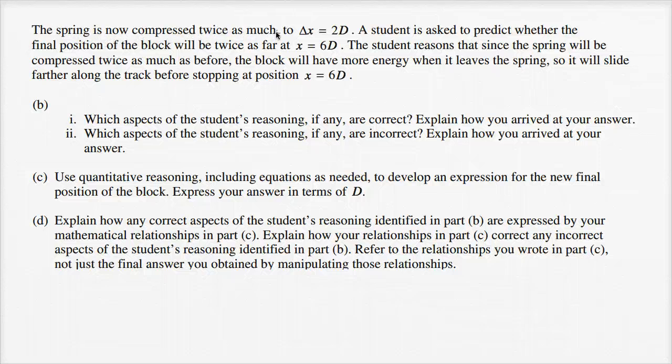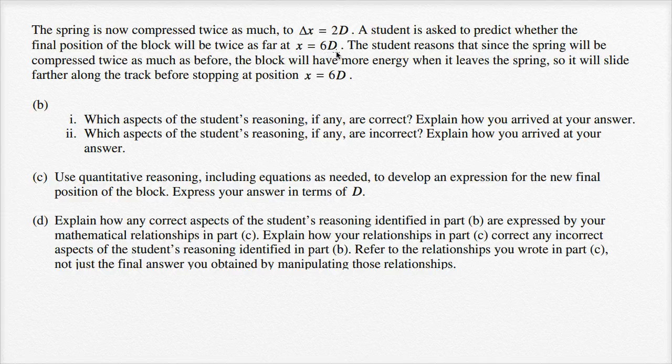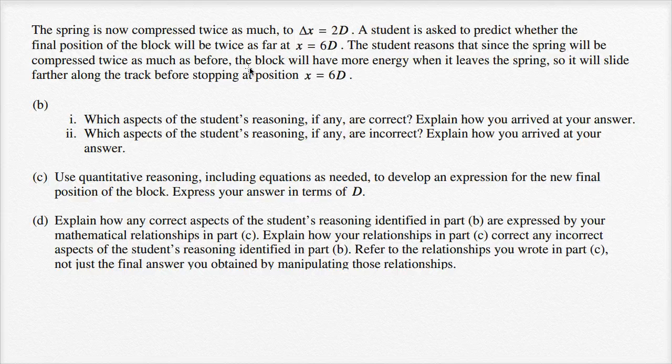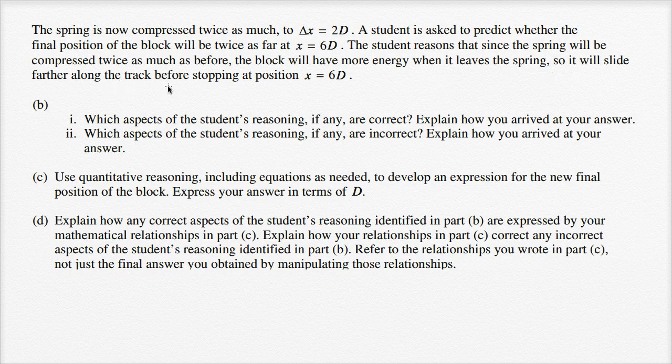The spring is now compressed twice as much to delta x equals 2D. A student is asked to predict whether the final position of the block will be twice as far at x equals 6D. The student reasons that since the spring will be compressed twice as much as before, the block will have more energy when it leaves the spring, so it will slide farther along the track before stopping at position x equals 6D.